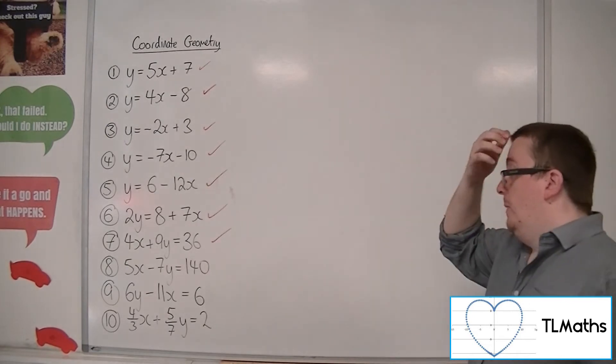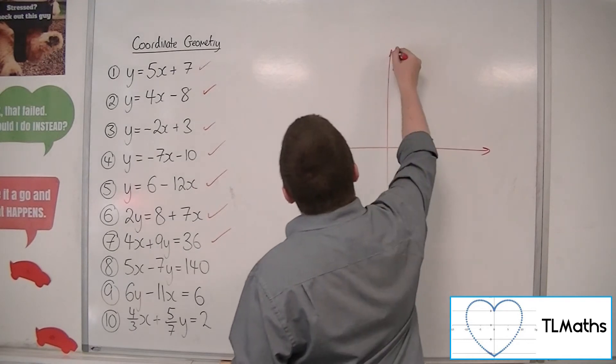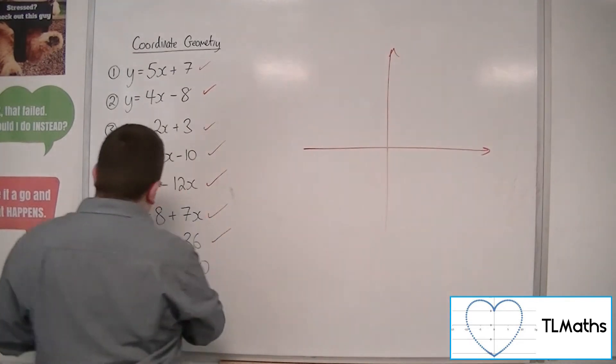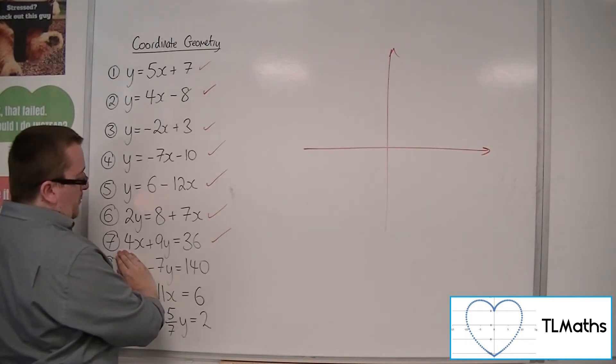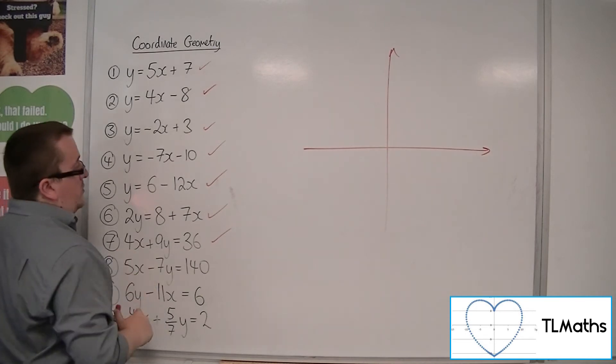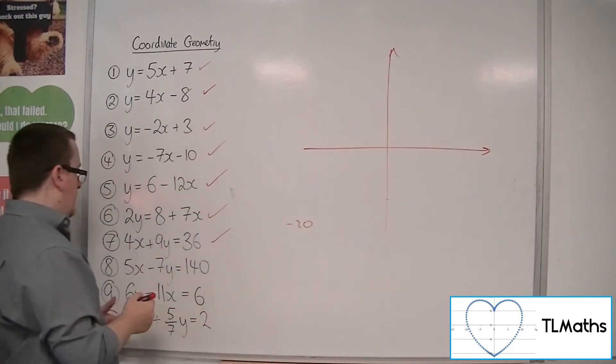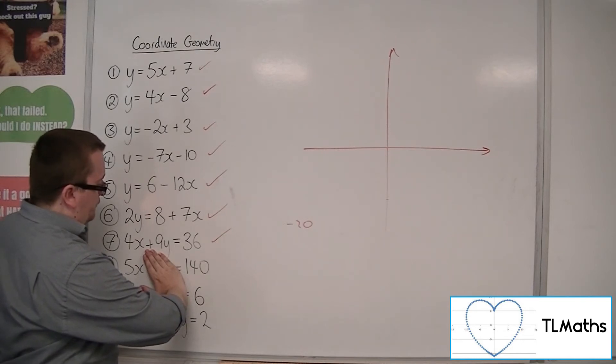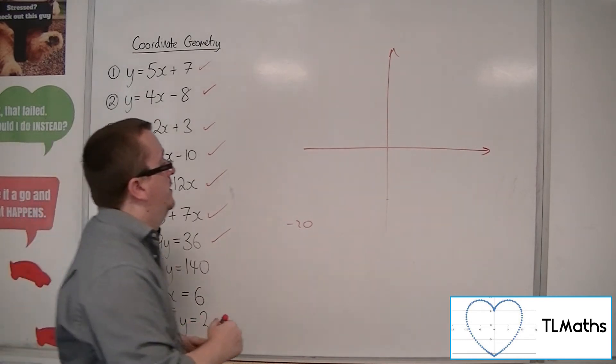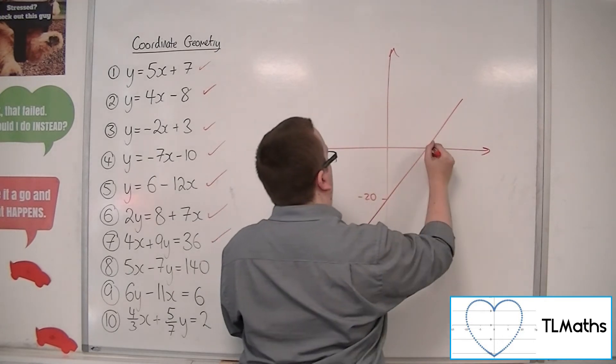Now, for number 8, 5x minus 7y equals 140. So when x is 0, minus 7y equals 140. So y would have to be equal to minus 20. So it's crossing through at minus 20 down here. Okay, make a little note. So, covering up the minus 7y, 5x must be 140. So what's that? 28. So x must be 28. So minus 20. 28.